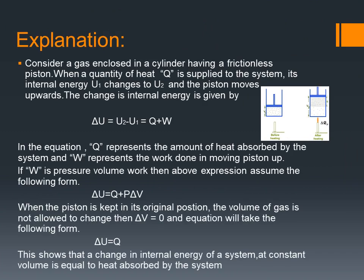Consider a gas enclosed in a cylinder having a frictionless piston. When a quantity of heat Q is applied to the system, its internal energy U1 changes to U2 and the piston moves upward. The change in internal energy is given by delta U equals U2 minus U1 equals Q plus W. Here Q represents the amount of heat absorbed by the system and W represents the work done in moving the piston up. If W is pressure-volume work, then the expression takes the form: delta U equals Q plus P delta V.